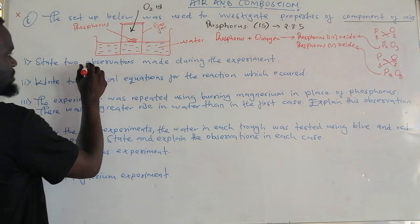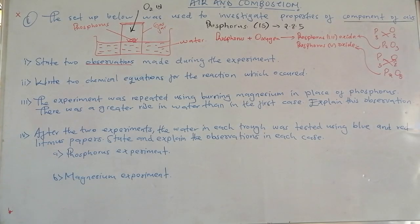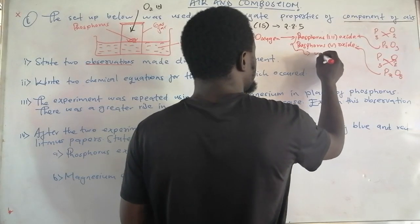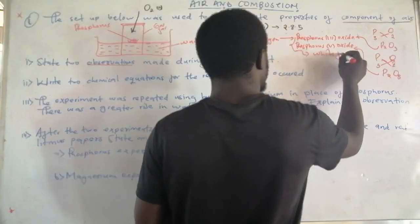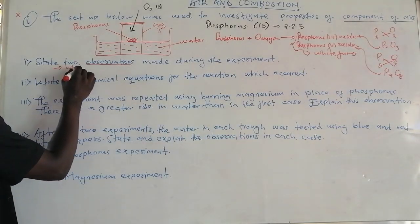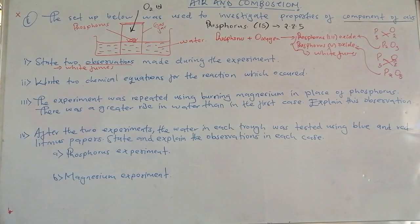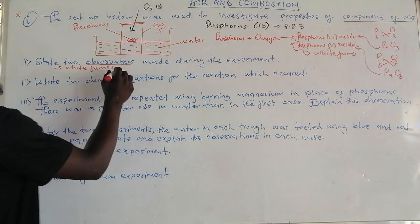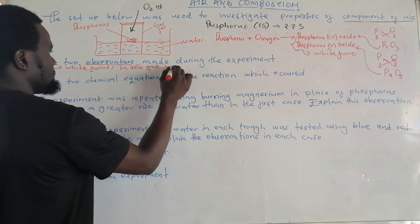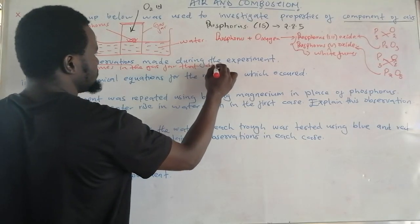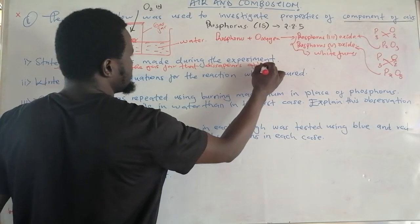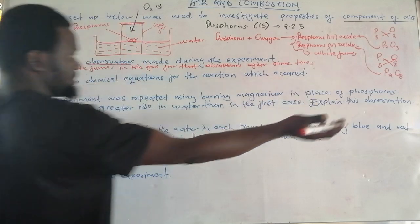Now let us try to answer the observations. What are the observations made? First, when phosphorus burns in air, it normally turns into white fumes. These white fumes are basically phosphorus trioxide or phosphorus pentoxide. The white fumes normally disappear after some time. That is the first observation.